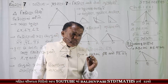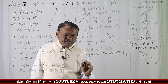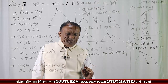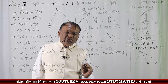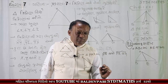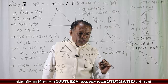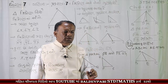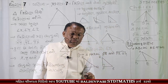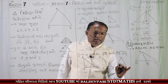ત્રિકોણ PQR માં PQ અને PR બરોબર હોઈ તો કાટ કોણ ત્રિકોણ બને. ક્યારે બે વેધ બને તો કાટ કોણ ત્રિકોણ હોઈ. P આ ત્રિકોણ માં કાટ કોણ, લઘુ કોણ, અને ગુરુ કોણ ઓળખો.